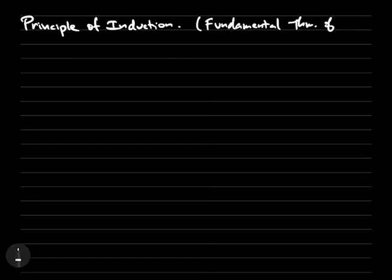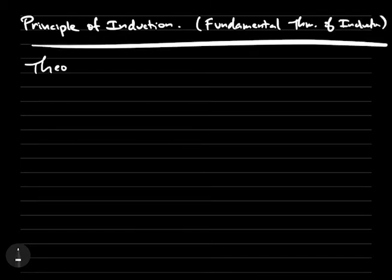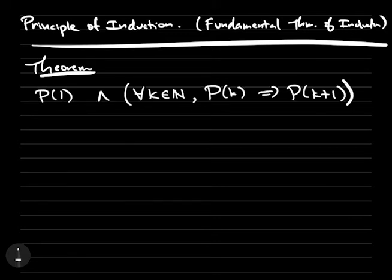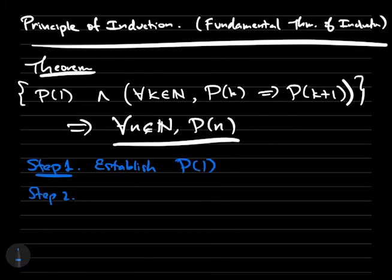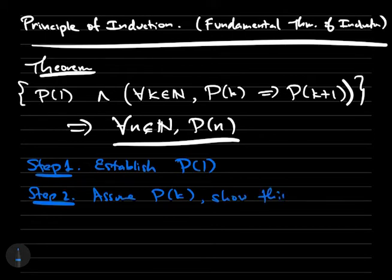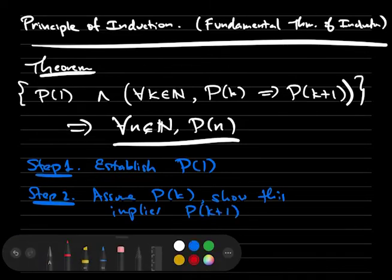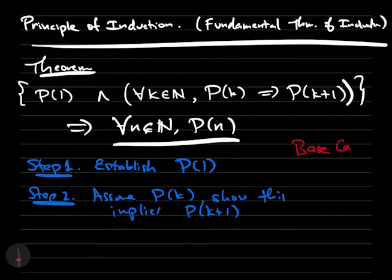Let us state the principle of induction as the following theorem, which can be written in the following very compact manner. If we know that p1 is true, and whenever p is true for a particular k, it is also true for k plus 1, this gives us that p of n is true for any n in the natural numbers. Another way of saying this: an induction proof has two steps. The first step is the base case, which is to establish that p of 1 is true. The next step is the induction step, which means we assume that p of k is true, and then we show that this implies that p of k plus 1 is true. Now of course, this last step is an implication, and in different contexts, we might prove the induction step directly, or by contradiction, or by the contrapositive, whatever happens to be the most convenient.